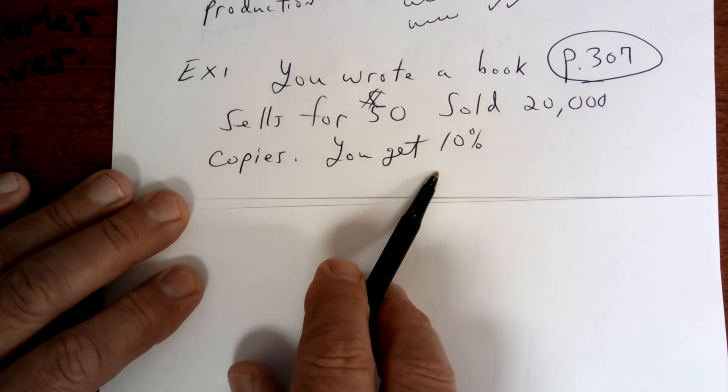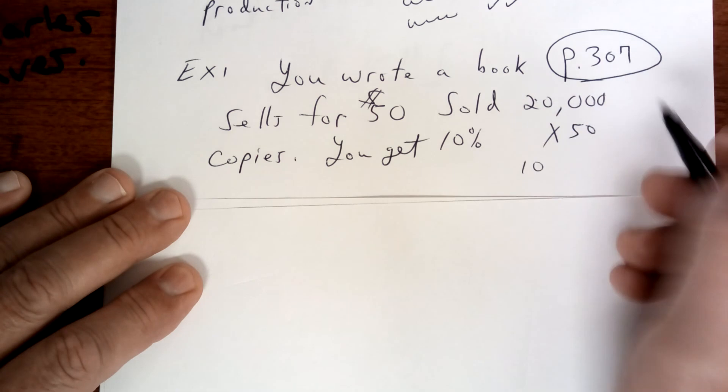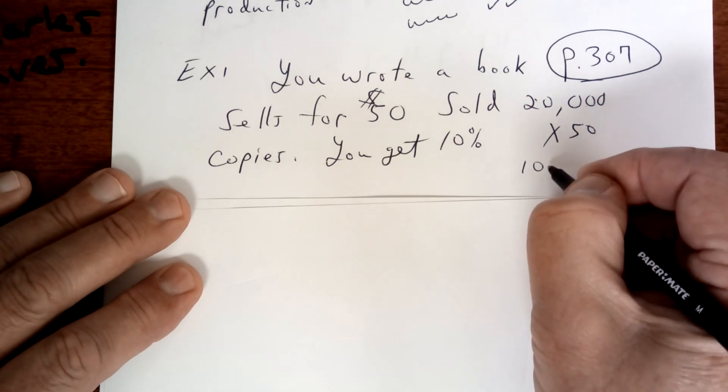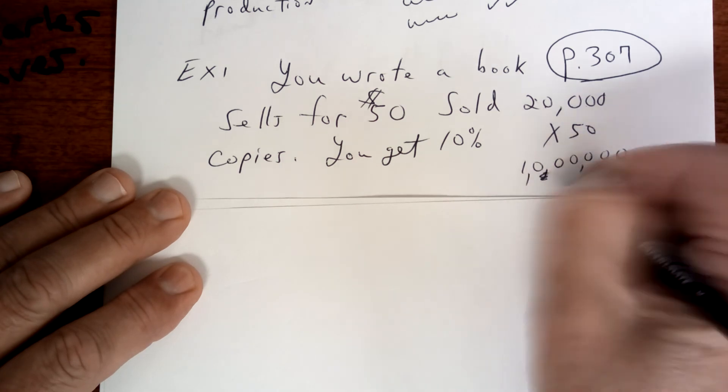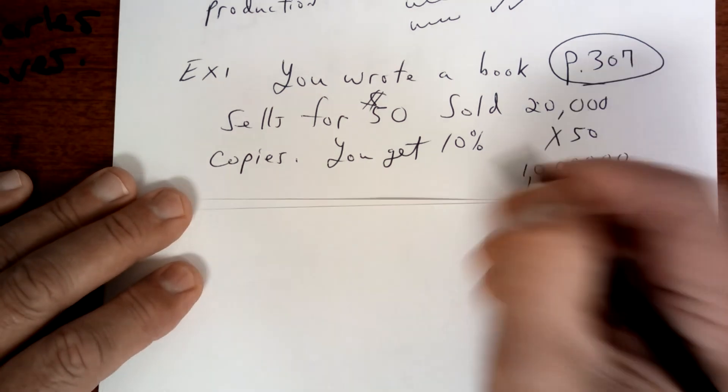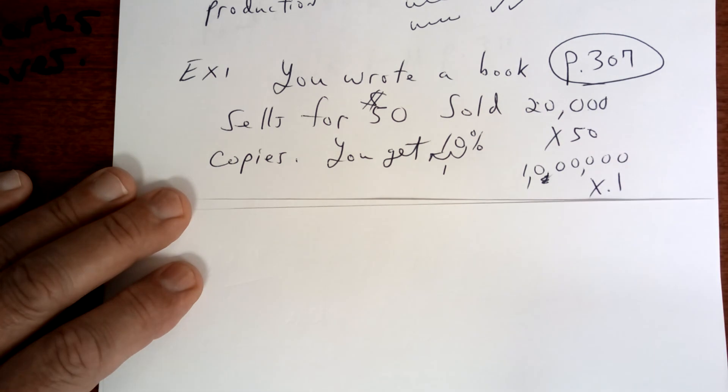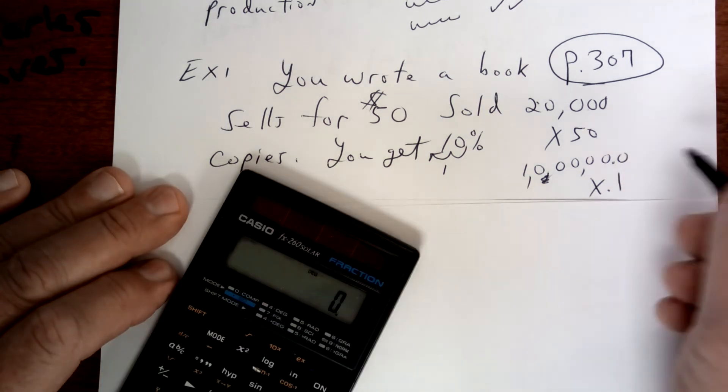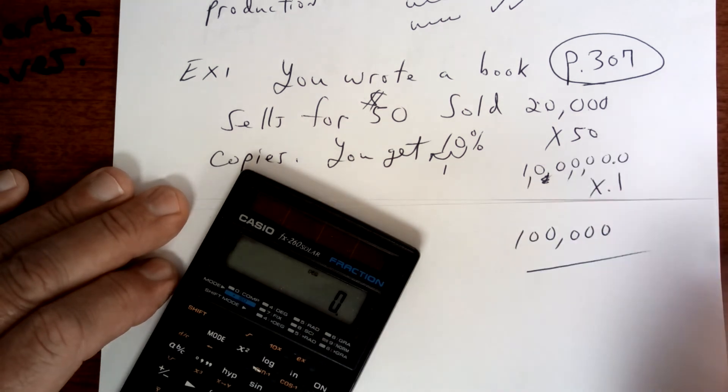So you're going to take $50 and multiply here. 5 times 2 is 10 and you have 1, 2, 3, 4, 5 zeros. So you have 5 zeros. It looks like you made a million dollars. Times, you want to take the 10% and move your decimal so that's times 0.1. And so you just multiply that out. Move your decimal right there. So I'm going to say you made $100,000. You can check that on your calculator.